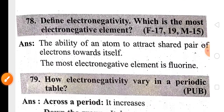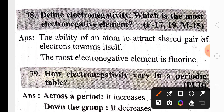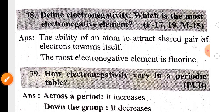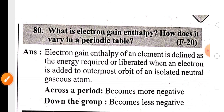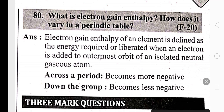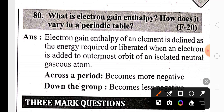Another periodic property is electronegativity — it is the tendency to attract the shared pair of electrons towards itself. The most electronegative element in the periodic table is fluorine; electronegativity increases across the period and decreases down the group. Electron gain enthalpy is the amount of energy released when an electron is added to the outermost shell of an atom to form an anion; across the period it increases and down the group it decreases.